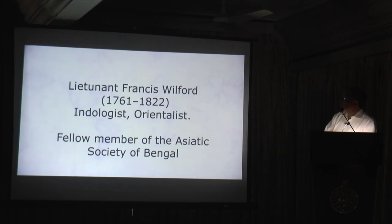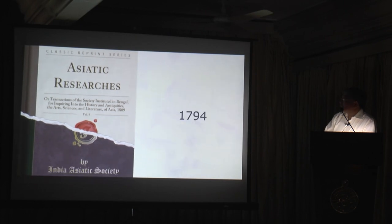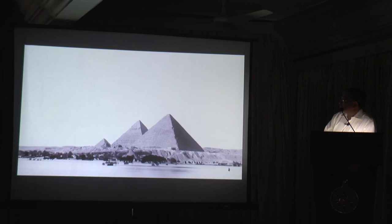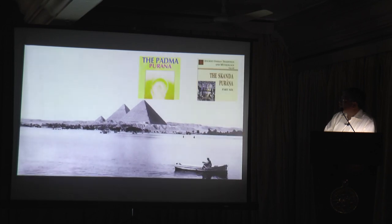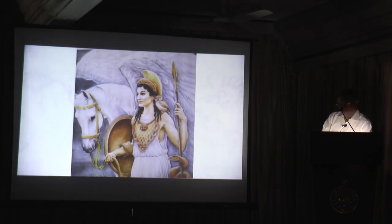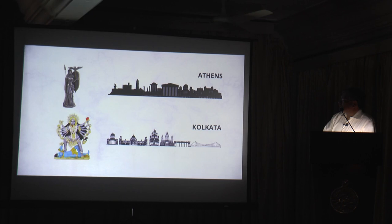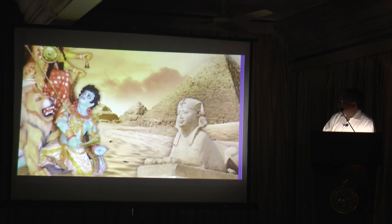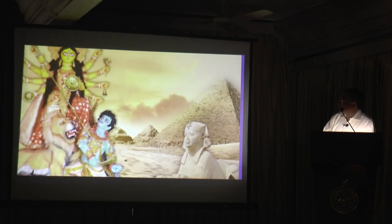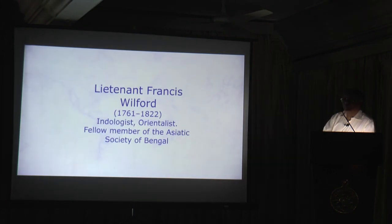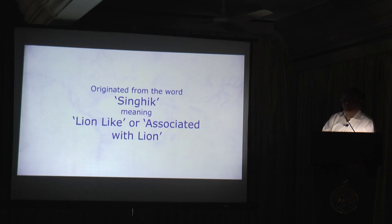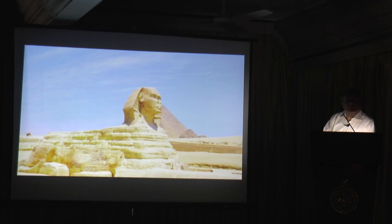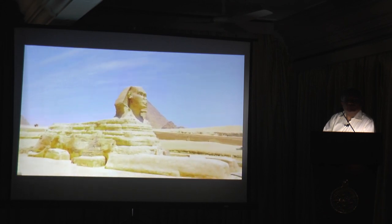Lieutenant Wilford, a British officer, wrote an article in Asiatic Researches in 1794 where he established that the Nile River was known as the Kali River, as mentioned in the Padmapurana and Skandapurana. Similarly, in Greece, Athena was very popular at the early stage of European civilization. Athens derived its name from Athena, like Kolkata derives its name from Kali. Lieutenant Wilford mentioned that the Sphinx name originated from the word 'Shingik,' meaning 'Shingho-like' or associated with lion. Shingho is a typical Bengali word meaning lion.